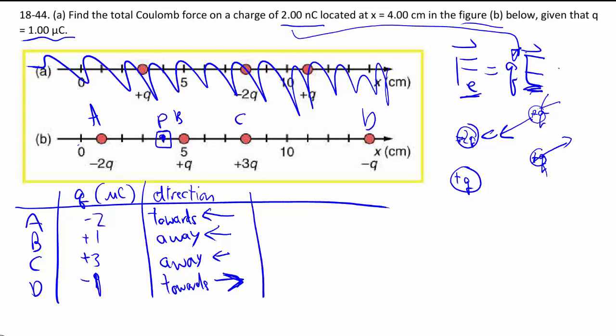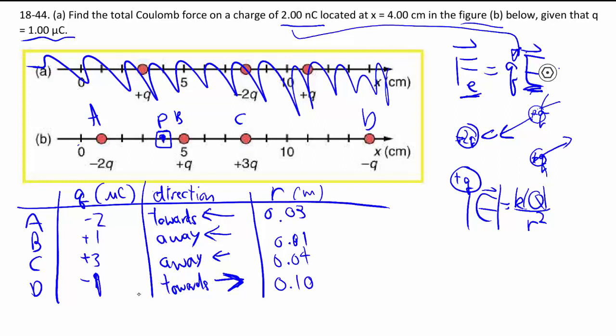The calculation here is still E is equal to kq over R squared, and again, we'll just work with the magnitude because we have that with the direction. So, we still need R. R, as we have worked out, it's 3 centimeters, putting this in meters, then 1 centimeter to B, then 4 centimeters to C, and 10 centimeters to D.